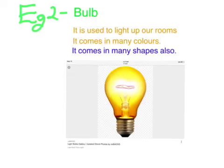A bulb is used to light up our rooms. It comes in many colors and many shapes. There are two to three sizes: small, medium, and large.